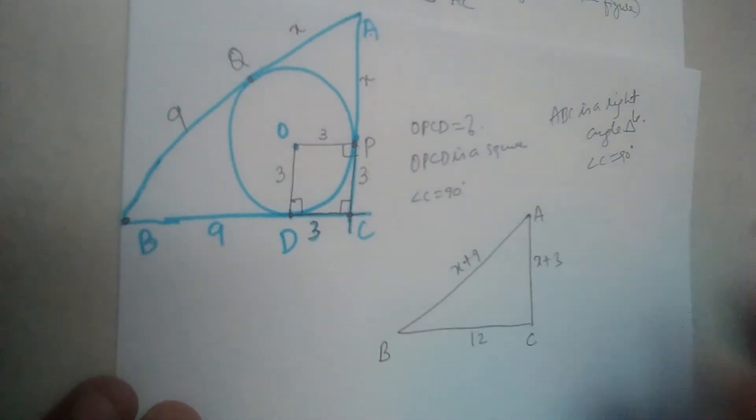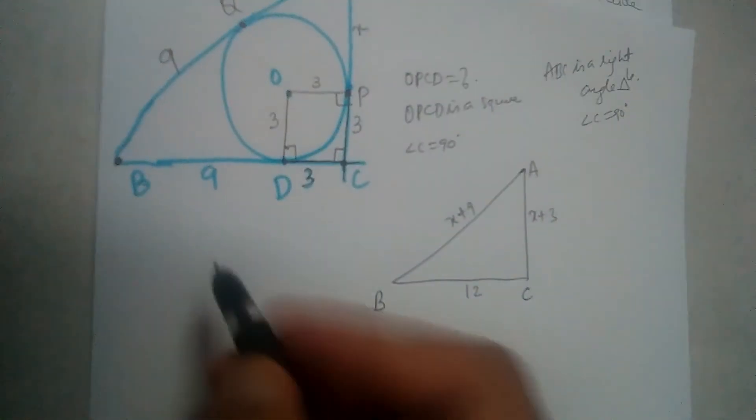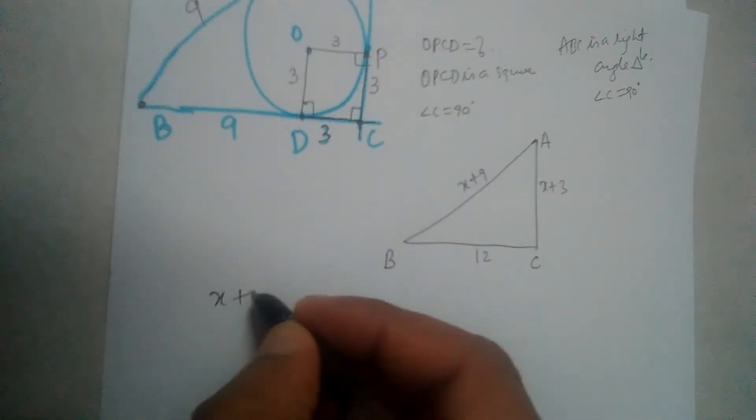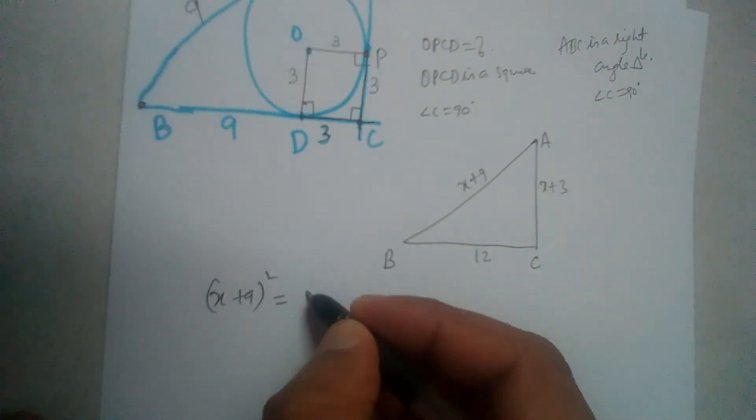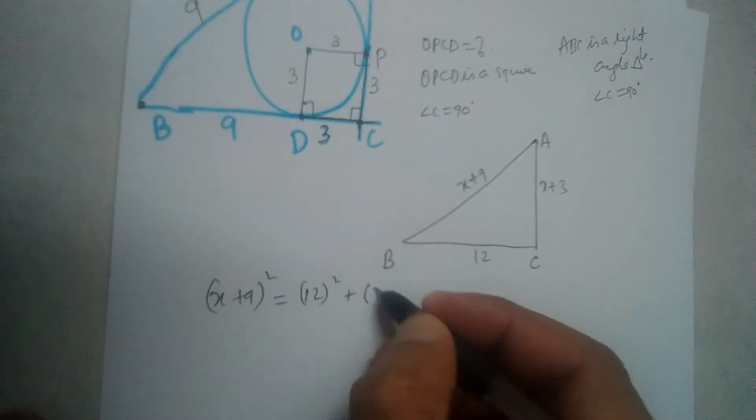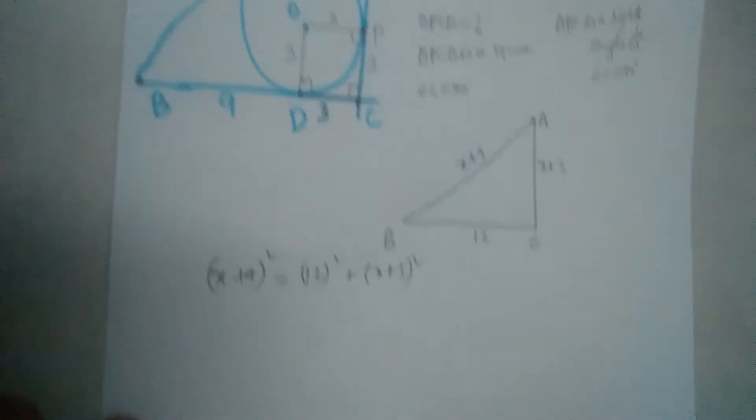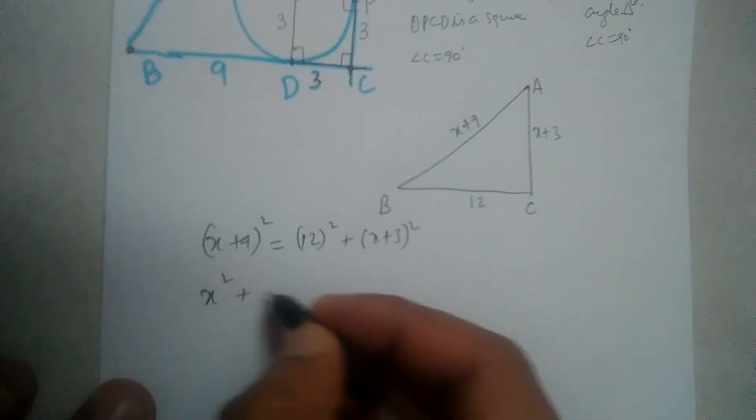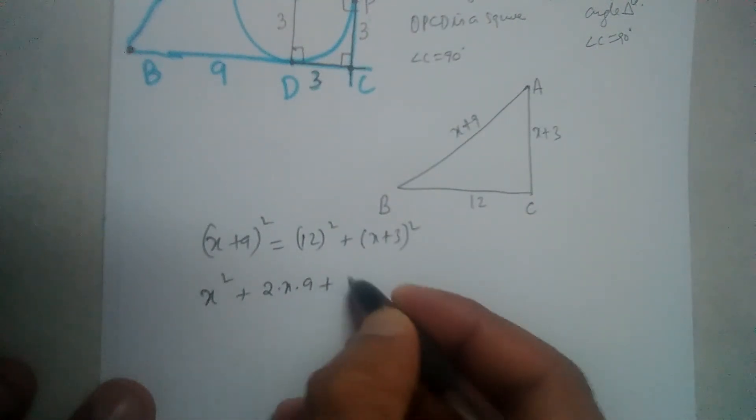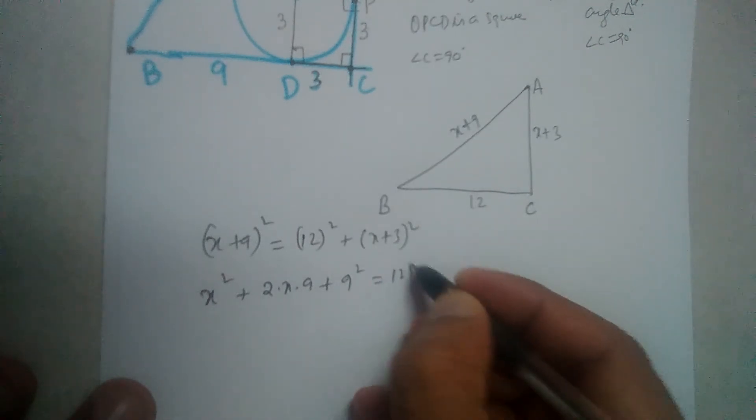Let us apply Pythagoras theorem. X plus 9 whole square equals 12 square plus X plus 3 whole square. X² plus 2X times 9 plus 9² equals 12² plus X² plus 2X times 3 plus 3².